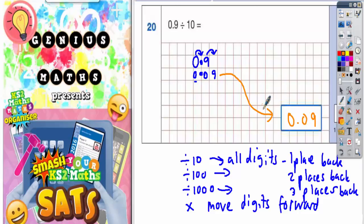0.9 divided by 10 is 0.09. If you divide it by 10 again, you'd get 0.009.